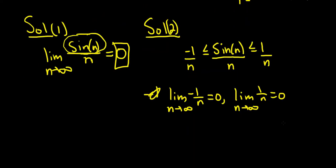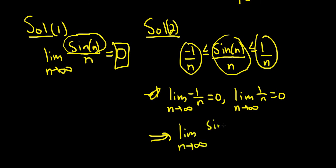So because both of these limits here are zero, and this is trapped in the middle, whatever is in the middle is also zero. So the limit as n goes to infinity of sine n over n is equal to zero. And this is by something called the squeeze theorem, something you usually learn in a calculus one class.